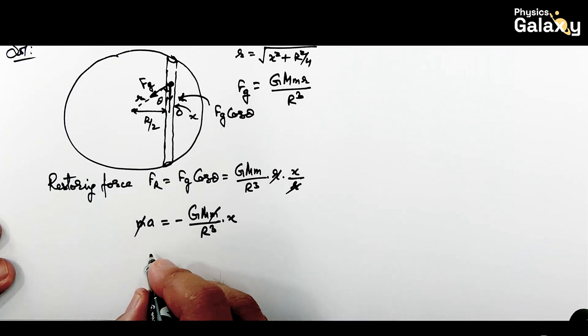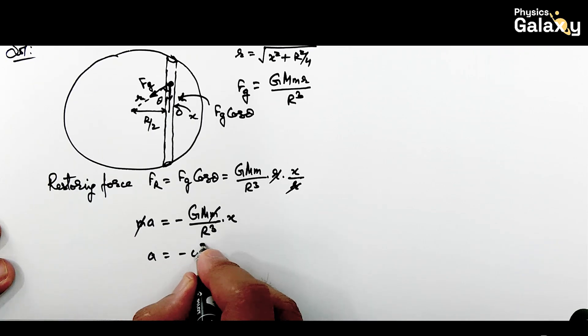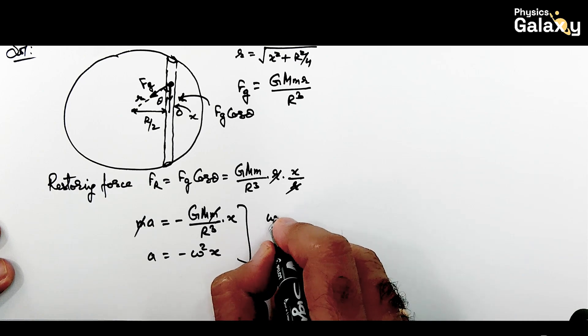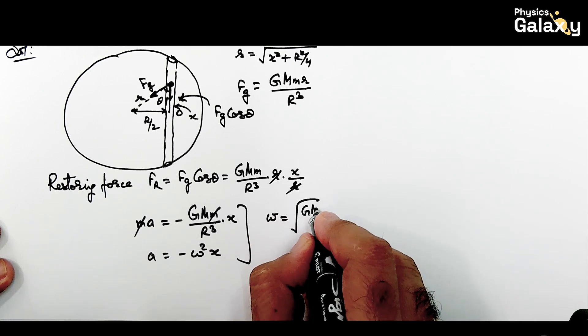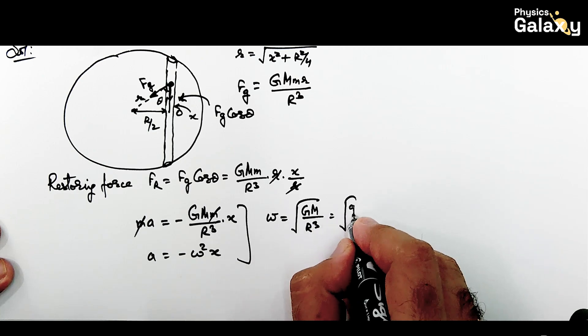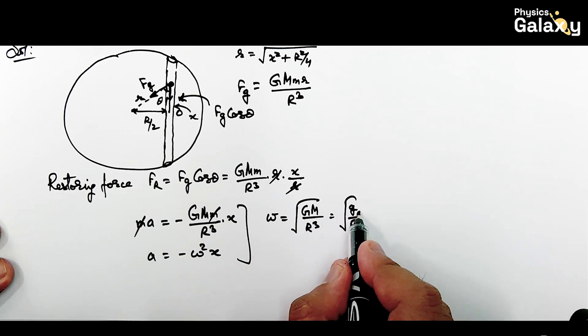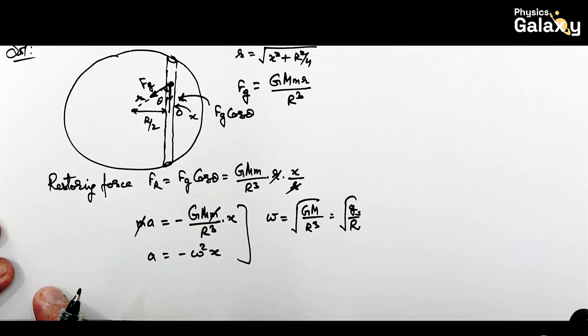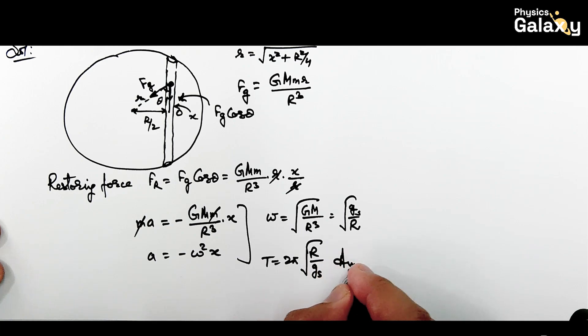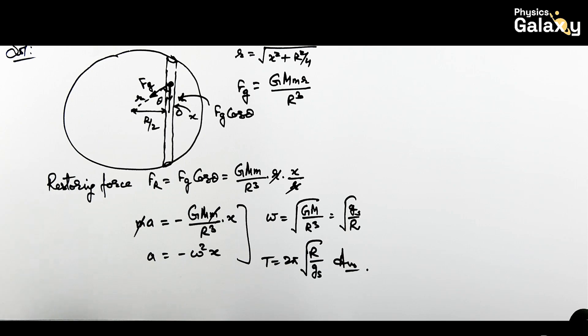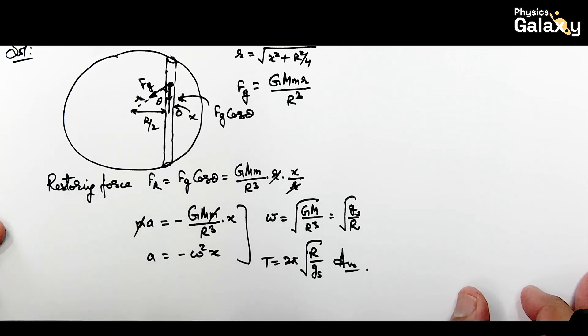Comparing with a = -ω²x, this gives angular frequency ω = √(Gm/r³), which can be written as √(g/r), where g is gravitational field on Earth's surface. Time period is 2π/ω = 2π√(r/g). That's the result for the time period of oscillation.